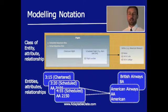And Scheduled flights have a relationship with the airline that is operating those flights. So as you can see from the example at the bottom there, I've got on the right hand side of this diagram two airlines, British Airways and American Airways. On the left hand side I've got three flights, one of which is chartered and two of which are scheduled flights.